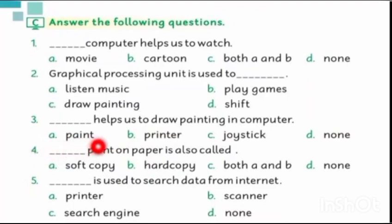Part 4 is print on paper is also called. What is the thing that is printed on paper? Soft copy, hard copy, both A and B, and none. So I have told you that the computer is called soft copy and the printer is called hard copy. So here will be hard copy.